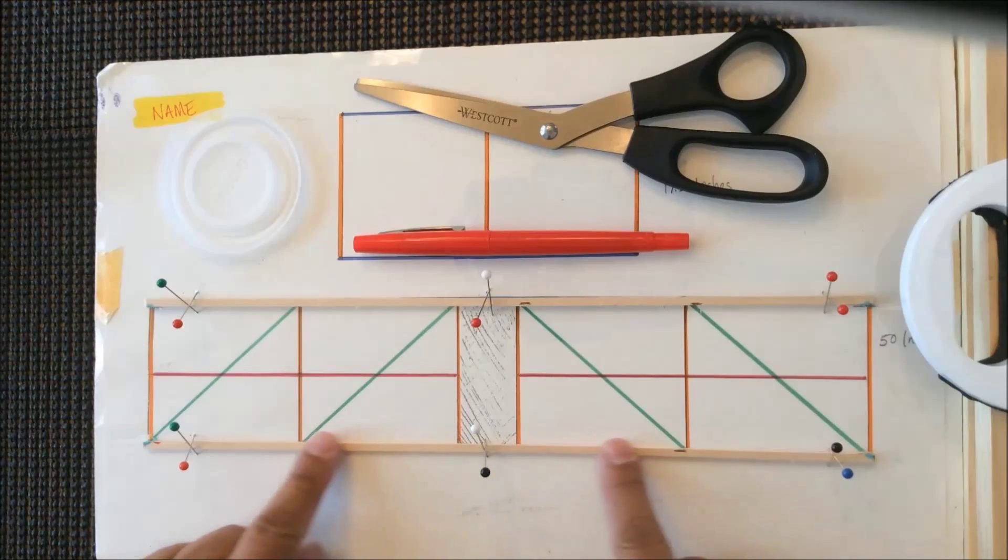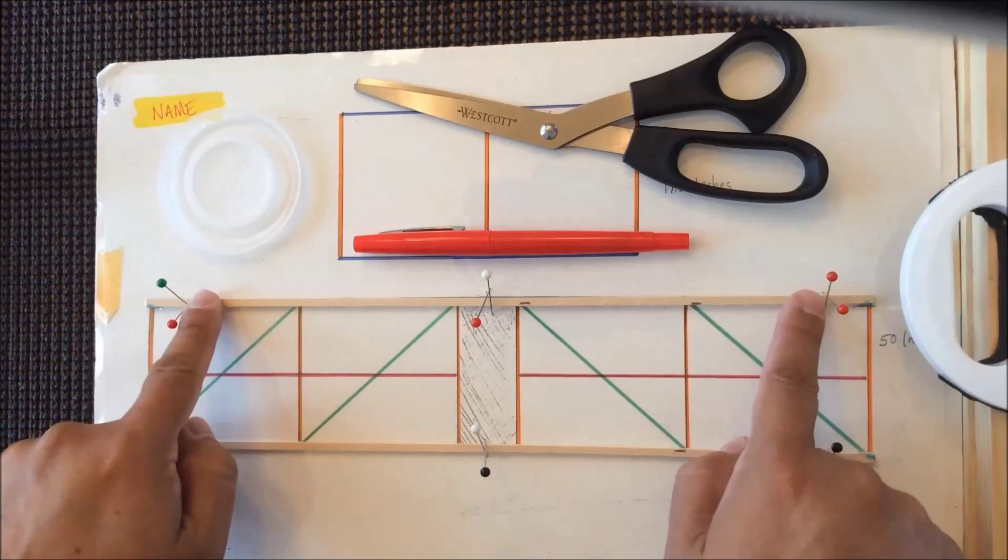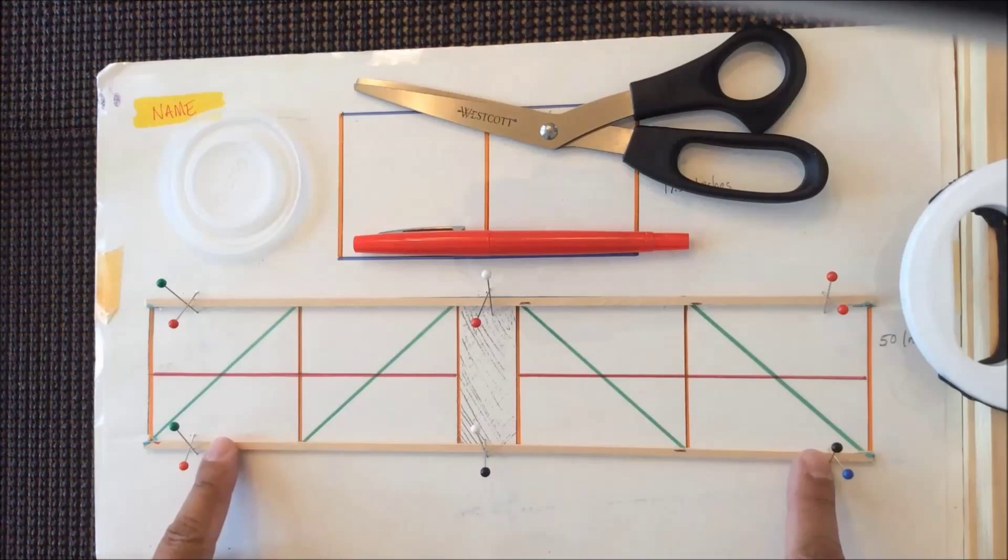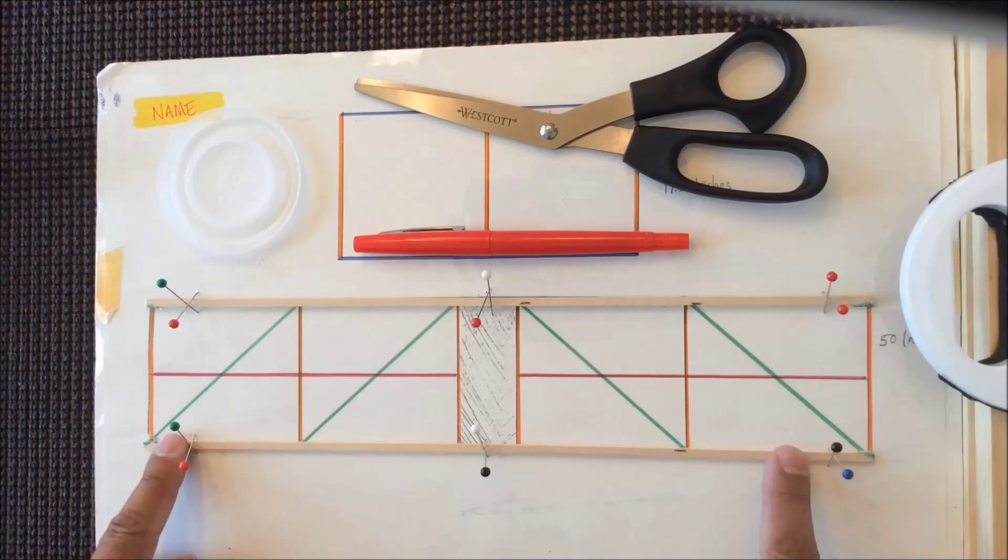We're going to start by making your top and bottom pieces on your design. That's these two long ones here. They should be either 12 or 12 and a half inches according to grade level. Cut and pin these first.